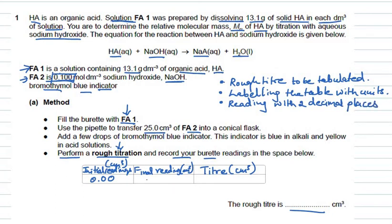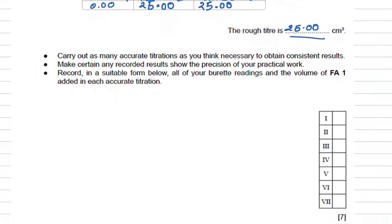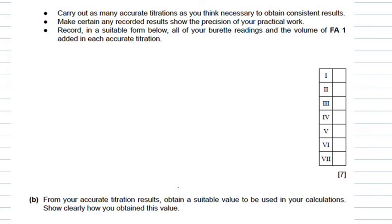So 0.00 is your initial reading. If the final reading is 25 cm³, write it as 25.00, making the difference also 25.00. Write your difference in the space given as 25.00 cm³. You can pause the video to note down the important points being discussed.